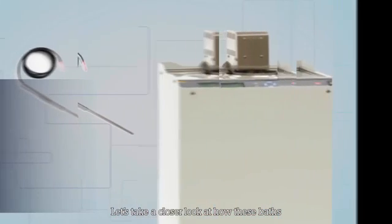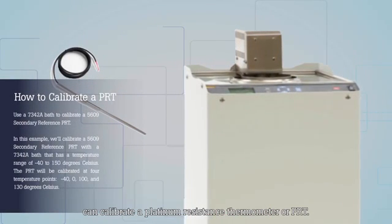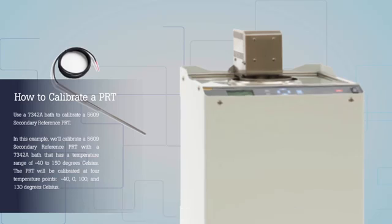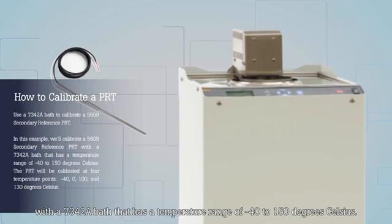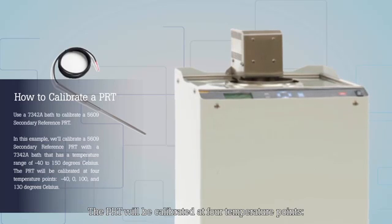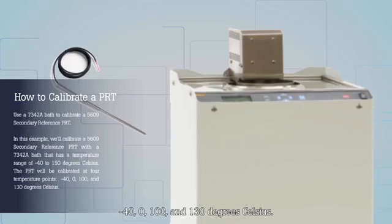Let's take a closer look at how these baths can calibrate a Platinum Resistance Thermometer or PRT. In this example, we'll calibrate a 5609 secondary reference PRT with a 7342 bath that has a temperature range of minus 40 to 150 degrees Celsius. The PRT will be calibrated at four temperature points: minus 40, zero, 100, and 130 degrees Celsius.